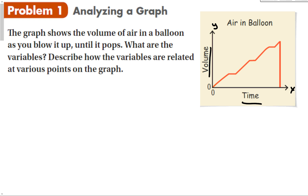Describe how the variables are related at various points on the graph. As I go forward in time, the volume is going up, then staying the same, then up, same, up, same, up — and then suddenly it drops all the way back down. If you think about how you actually blow up a balloon: here is the point where you're putting air in. That flat point is when you stop to take a breath — time moves forward but volume doesn't increase. Blow, take a breath, blow, take a breath, blow — and then at this peak, it pops. The volume shoots down to zero and we stop the graph.